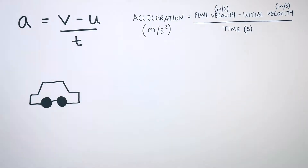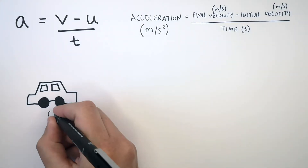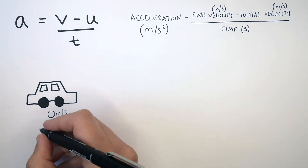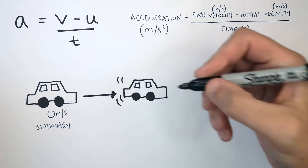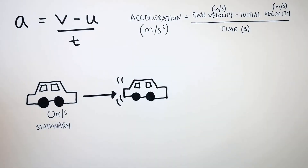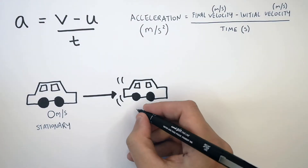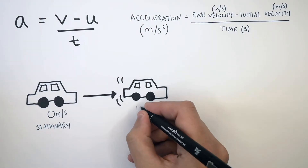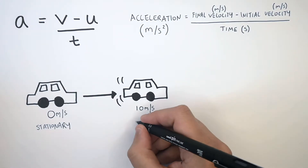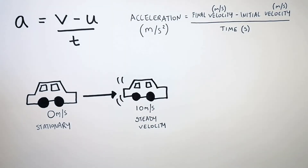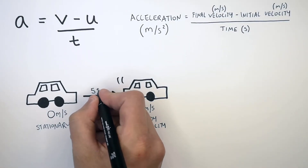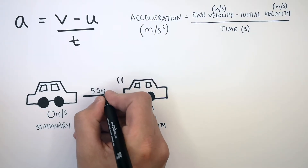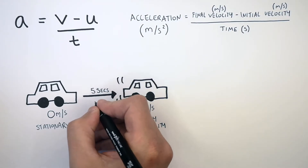This here is a car. It is stationary — it has a velocity of zero meters per second. The stationary car is now going to increase its velocity. We call this acceleration. It increases its velocity from zero meters per second to 10 meters per second, traveling at a steady velocity of 10 meters per second. It takes the car five seconds to accelerate from zero to 10 meters per second.